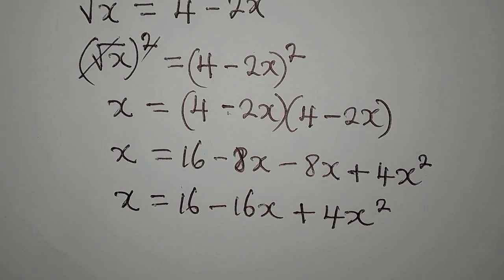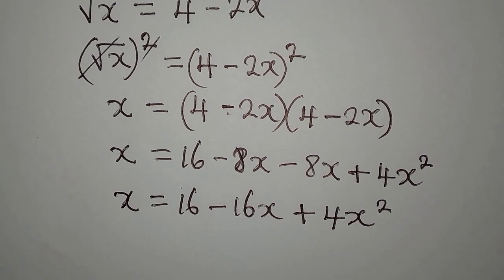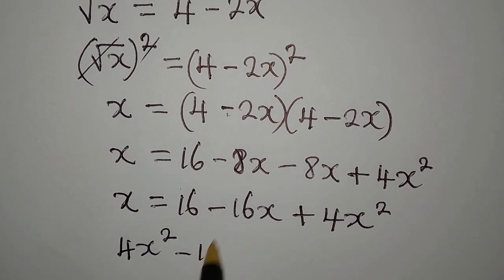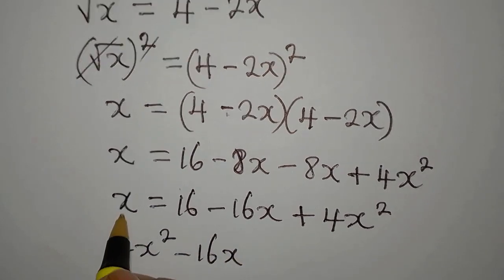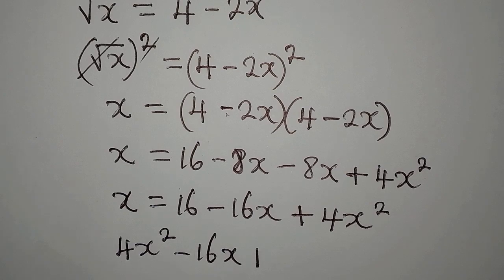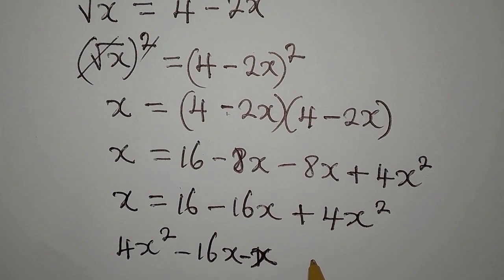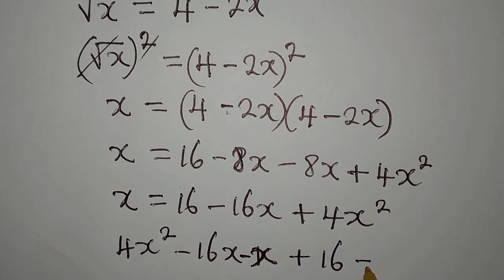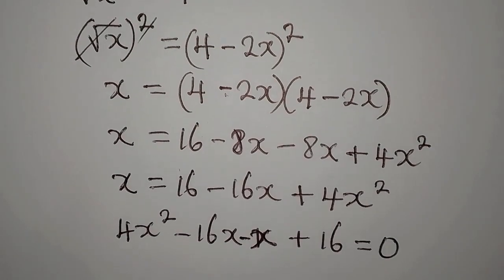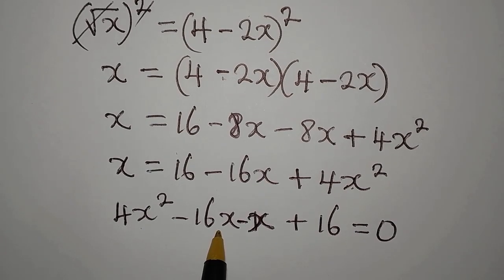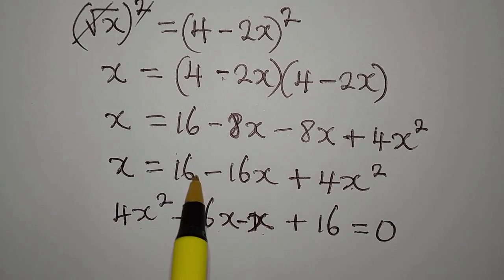Then we need to rearrange this. We are going to have 4x squared will come first, minus 16x. This x is coming to the other side so it becomes minus x. Then the 16, so we have 4x squared minus 17x plus 16 equals zero.